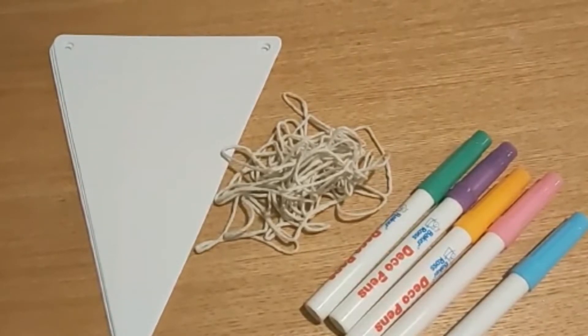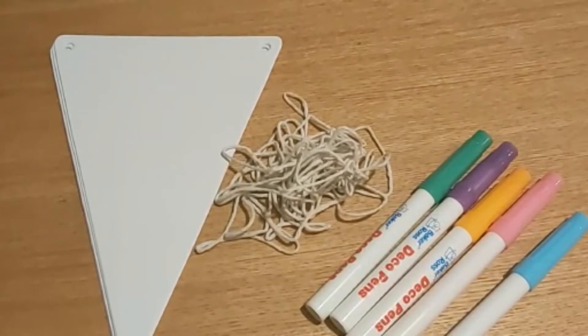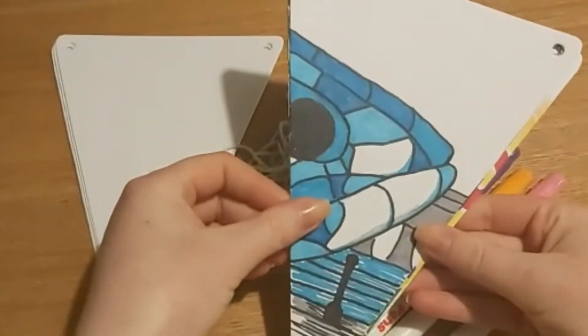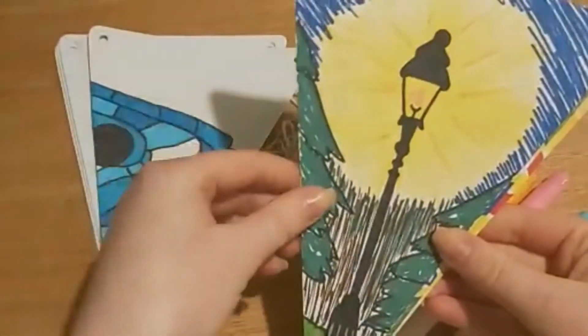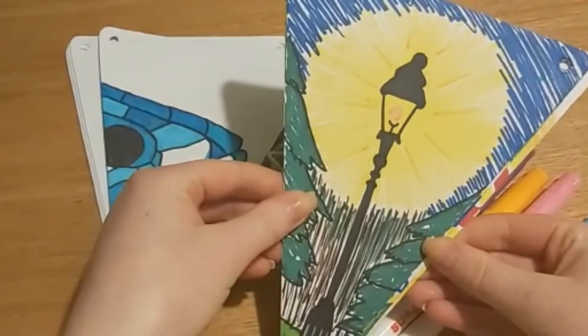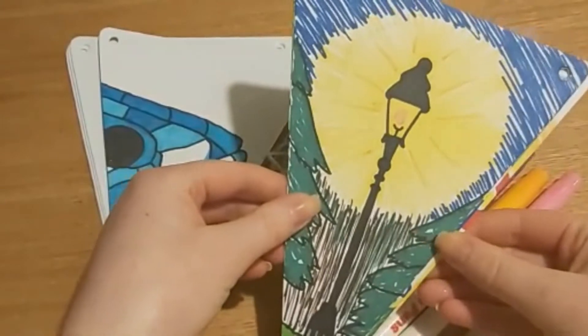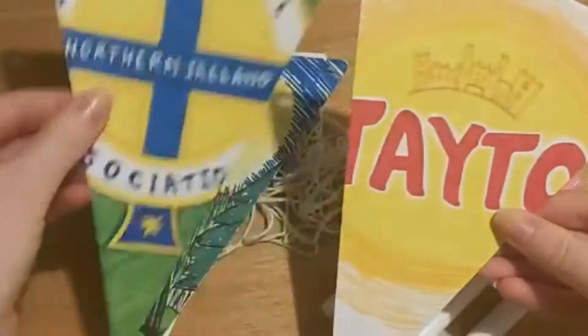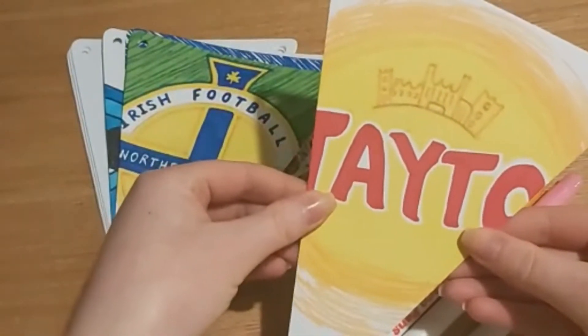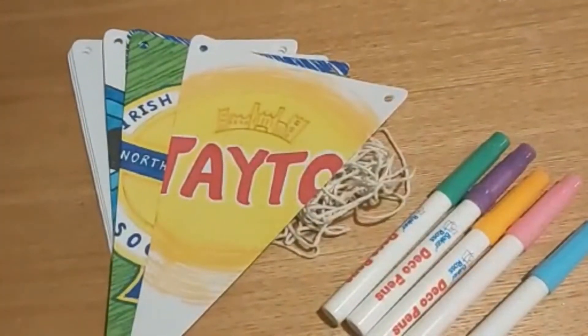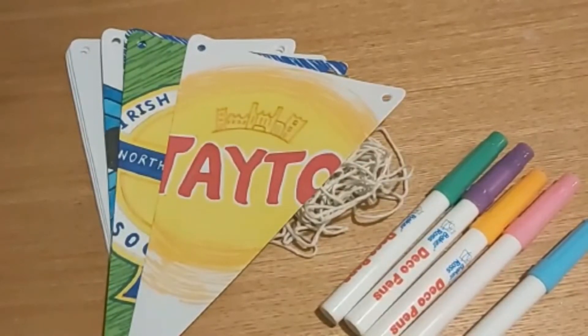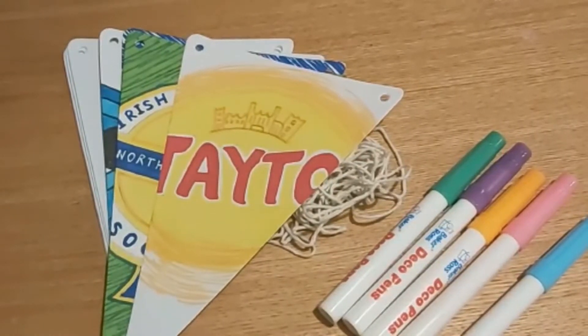You can decorate your bunting any way that you'd like. I'm going to show you some of mine. So I've chosen a range of different images from famous landmarks like the big fish to the lantern from my favourite book The Lion, the Witch and the Wardrobe which was written by C.S. Lewis who is from Northern Ireland. Of course I've got the national football team and my favourite packet of crisps. So you can choose these or you can think of anything that makes you think of Northern Ireland and makes you proud to be Northern Irish and you can design your very own.